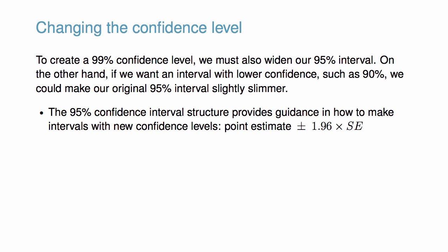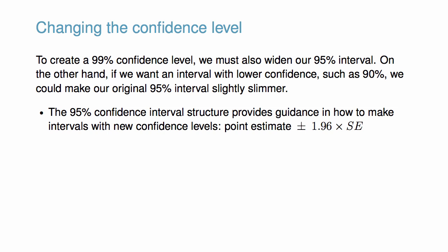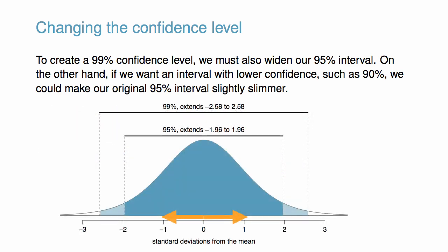There are three components to this interval: the point estimate, 1.96, and the standard error. The choice of 1.96 times the standard error is based on the point estimate being nearly normal. It's close to 2, like the confidence interval we used earlier, but it's a little more precise. To create a 99% confidence interval, change 1.96 to 2.58. This number comes from the normal distribution. If we looked at the normal distribution, going 2.58 standard deviations in either direction would capture 99% of all observations.